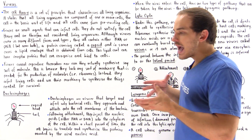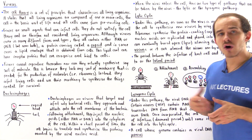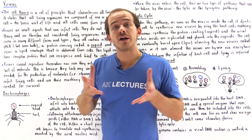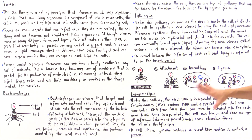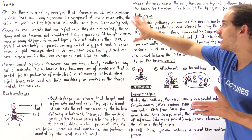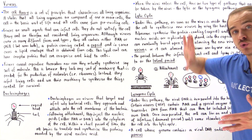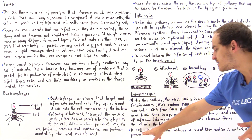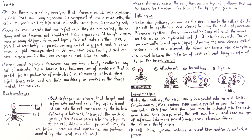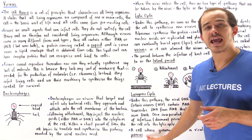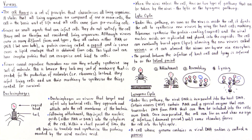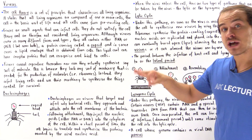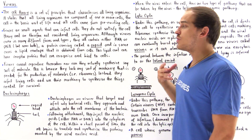Eventually, some type of environmental factor can cause the cell to undergo the lytic cycle. For example, UV radiation is one environmental factor that can take a cell in the lysogenic cycle and force it into the lytic cycle, causing it to produce many new viruses and eventually lyse. A cell whose genome contains a viral DNA section integrated inside it is known as a provirus. These are the two types of cycles that can be followed once a virus injects its nucleic acid into a host cell.